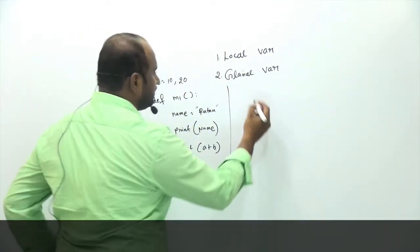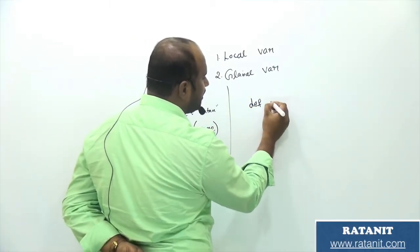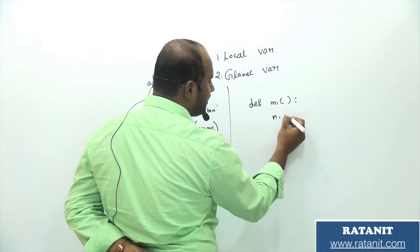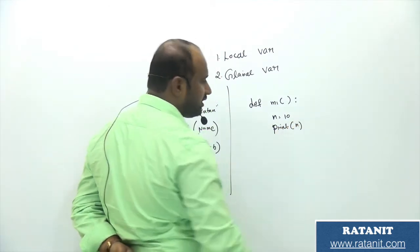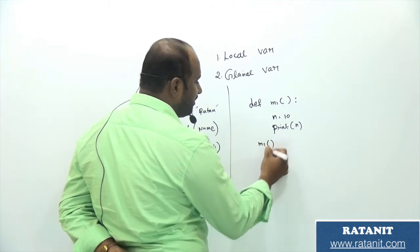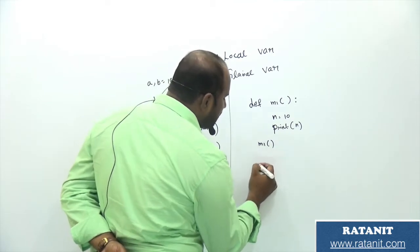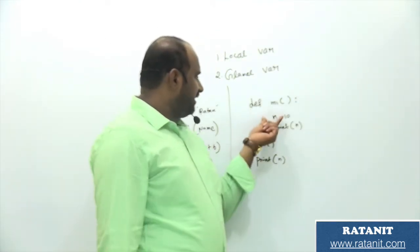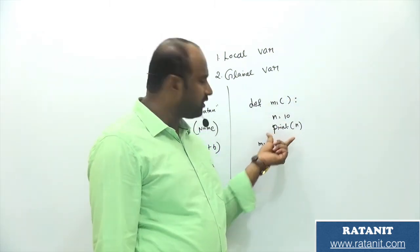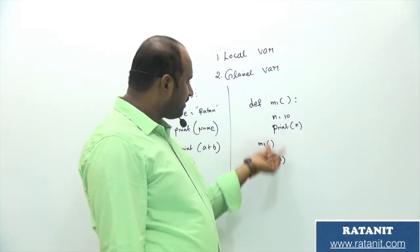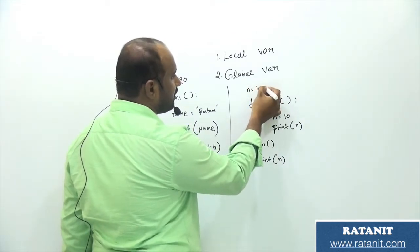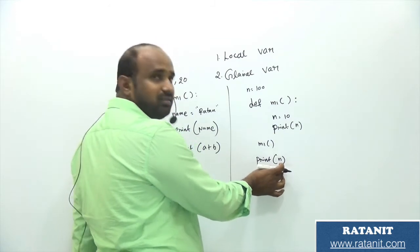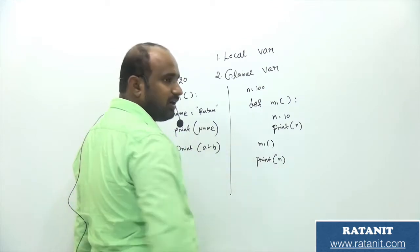Next, how to declare the function? By using the def keyword. def M1 — colon. Here I am declaring N equal to 10. How to print the data? By using print function — print(N). So if I call M1, the output is 10. But outside of the function, if I try to print(N) — is that possible? Not possible. The reason is N is a local variable, and the local variable scope is within the function only. To access N outside, we have to declare N here as well — N equal to 100. Then print(N) outside prints the global variable, which is 100.